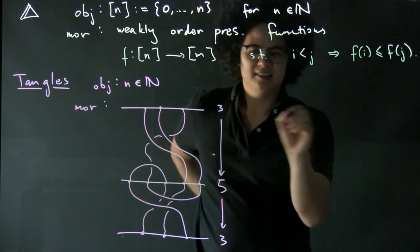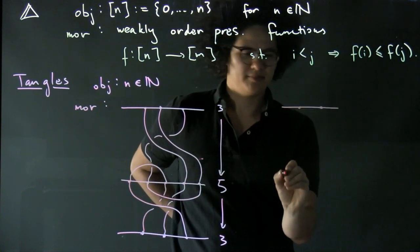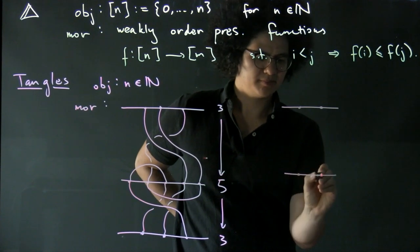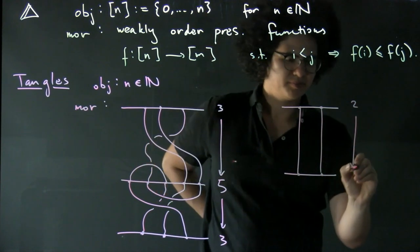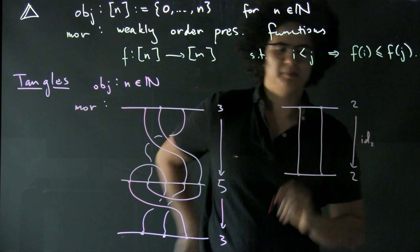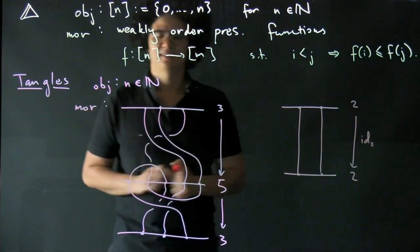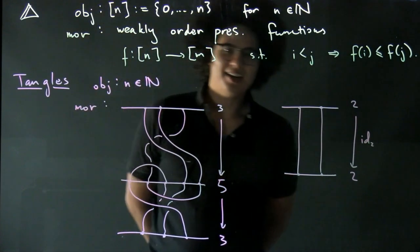And the identity on, say, two, is just this. So we call this the identity on two. All right, thanks.